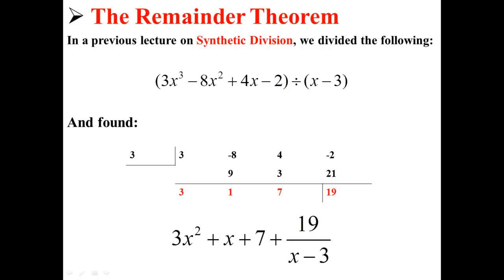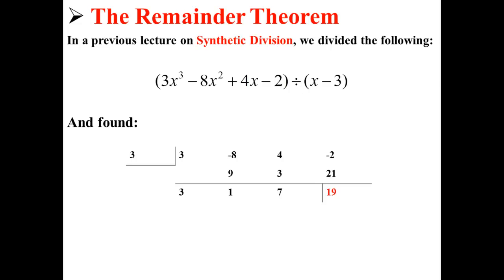To learn about the remainder theorem, you should already be somewhat familiar with synthetic division. In a previous lecture on synthetic division, we divided 3x cubed minus 8x squared plus 4x minus 2 by x minus 3, and we found a final answer of 3x squared plus x plus 7 plus 19 over x minus 3. In this case, our remainder was the number 19.